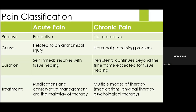There are different classifications of pain: mainly acute and chronic. Acute pain is protective and usually related to an anatomical injury — you can see the femur is broken. Chronic pain is related to neuronal changes. In terms of duration, acute pain is self-limited and tends to resolve as the tissues heal, whereas chronic pain continues beyond the expected timeframe. For treatment, acute pain can usually be managed with medications and non-pharmacological methods, while chronic pain requires more extensive treatment: multiple modes of therapy, physiotherapy, and psychological therapy.